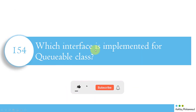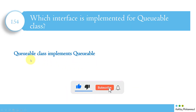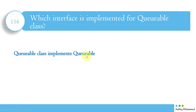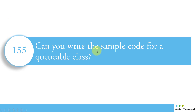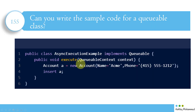So which interface is implemented for Queueable Apex? A Queueable class implements the Queueable interface. Like every other asynchronous class — Batch, Schedulable — Queueable also implements an interface, and for Queueable it will be the Queueable interface.